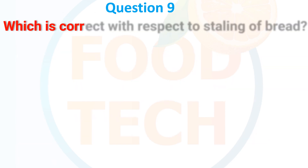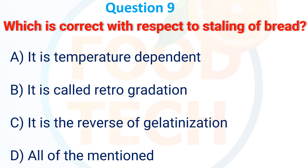Question 9. Which is correct with respect to staling of bread? A. Temperature dependent. B. It is called retrogradation. C. It is the reverse of gelatinization. D. All of the mentioned. The answer is D: all of the mentioned.